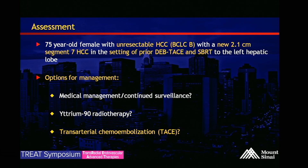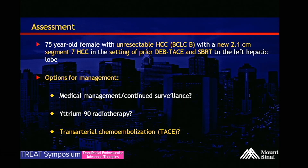So, the assessment: she's 75 years old with unresectable hepatocellular carcinoma, with a new 2.1-centimeter segment 7 HCC in the setting of prior treatment of the left hepatic lobe. She's not really a good candidate for medical management — she already has a new 2.1-centimeter segment 7 HCC on continued surveillance without treatment. Yttrium-90 was considered, but her total bilirubin level is 3. So for this patient, we opted for transarterial chemoembolization.